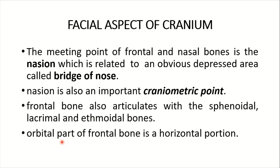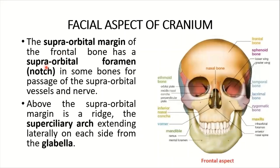There are five normas of the skull: norma frontalis from the front, norma lateralis from the side, norma verticalis from the superior aspect, norma occipitalis from the back, and norma basalis from the inferior. Norma basalis and norma lateralis are already uploaded — links will be provided below.